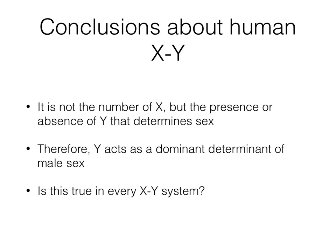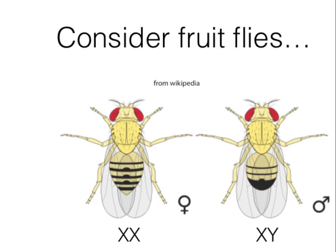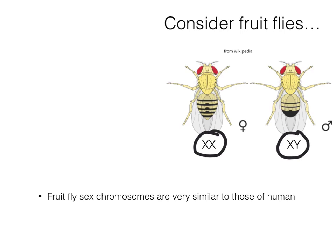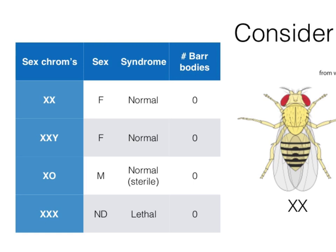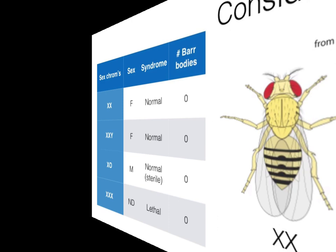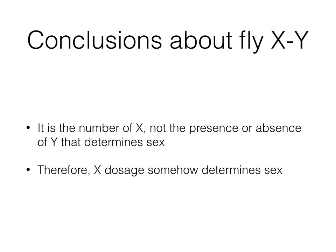Let's consider another XY system. The fruit fly has two sex chromosomes that appear very similar in principle to those of humans. However, sex chromosome aneuploids behave very differently. XXY, which was male in human, is a normal female in fly. And XO, which was female in human, is a nearly normal male in fly. XXX, also a normal female in human, is lethal in fly. Studying these responses, we conclude that Y matters very little or not at all in fly sex determination. Instead, it is the number of X's, i.e. X dosage, that determines sex.